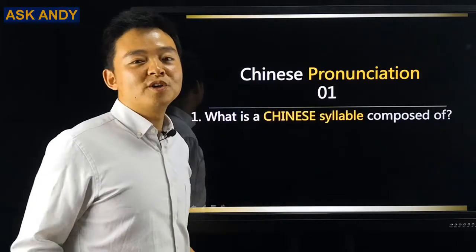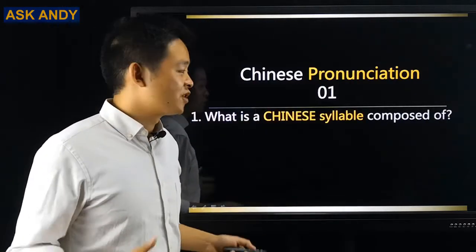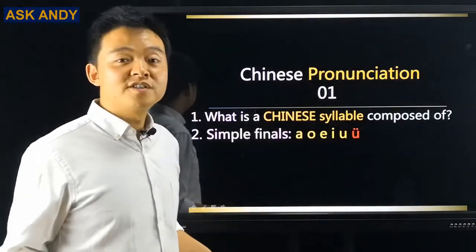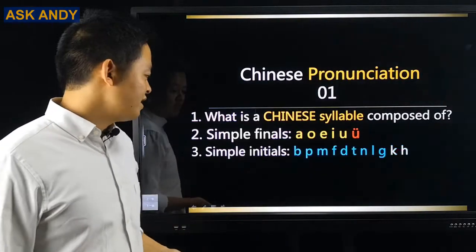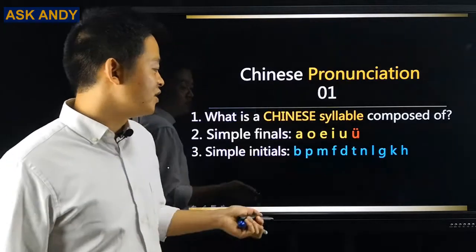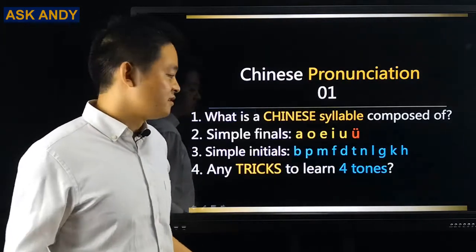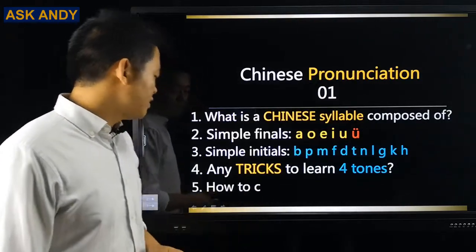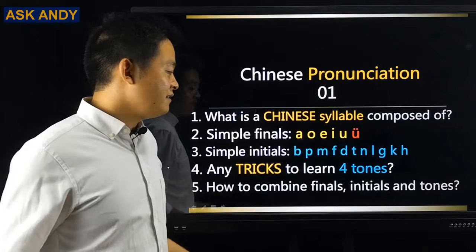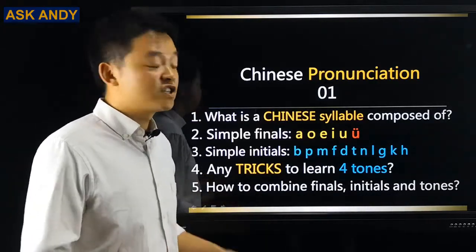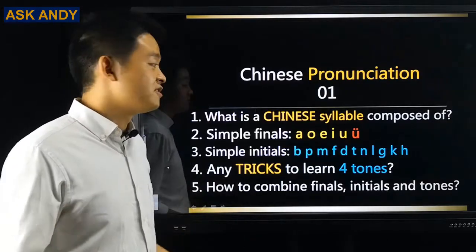I'm going to answer five questions. Question one: What is a Chinese syllable composed of? Question two: Simple finals. Question three: Simple initials. Question four: Any tricks to learn four tones? Question five: How to combine finals, initials, and tones to pronounce a Chinese syllable? I'm going to teach you how to do that in this video.